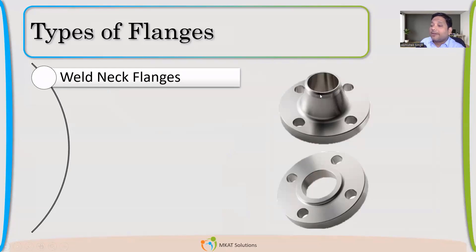The flanges which have a neck, like we have a neck. So flanges also have a neck. That is the reason they're called weld neck flanges. These necks are welded with the pipe or the corresponding part if it is a pressure vessel.